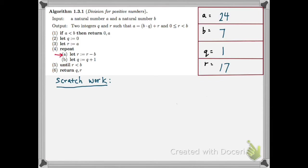I'm going to let R equal R minus B. So 17 minus 7 is 10, and that's my new value for R. I'm going to let Q be Q plus 1. So 1 plus 1 is 2, and so 2 is the new value for Q.